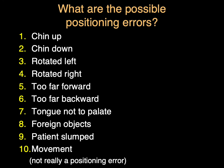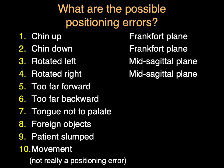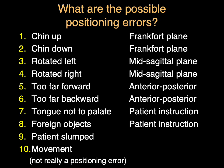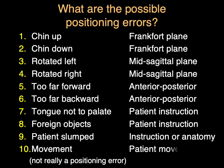So if we go back to what are the possible positioning errors: chin up or chin down — that's the Frankfurt plane. Rotated left or right is the mid-sagittal plane. Too far forward or backward — make sure the patient is positioned correctly in the anterior-posterior direction. Tongue to the roof of the palate and foreign objects are things we need to make sure we're instructing the patient about and looking for. Try to have the patient upright as much as possible and ask them to be still. Some people just move, whether it's accidental or they're trying to talk during the pan — that's usually inadvertent, and we don't see a lot of patient movement.